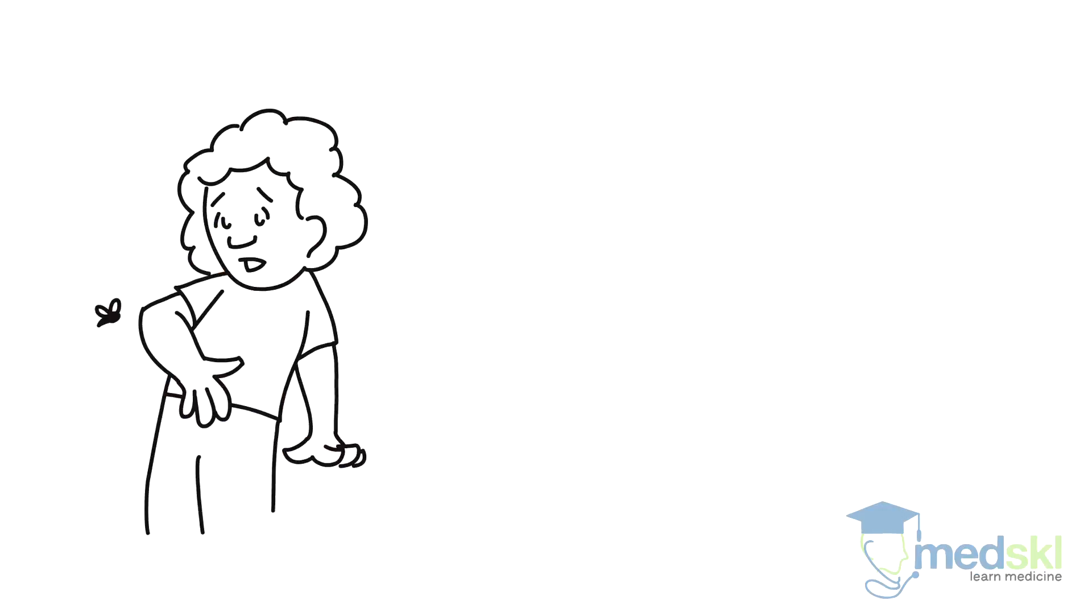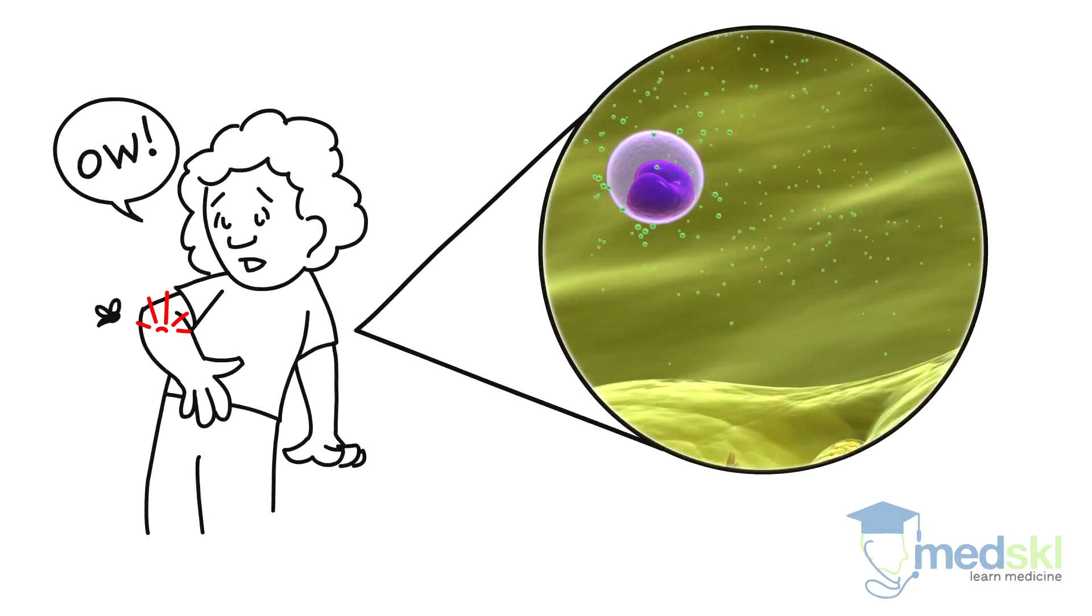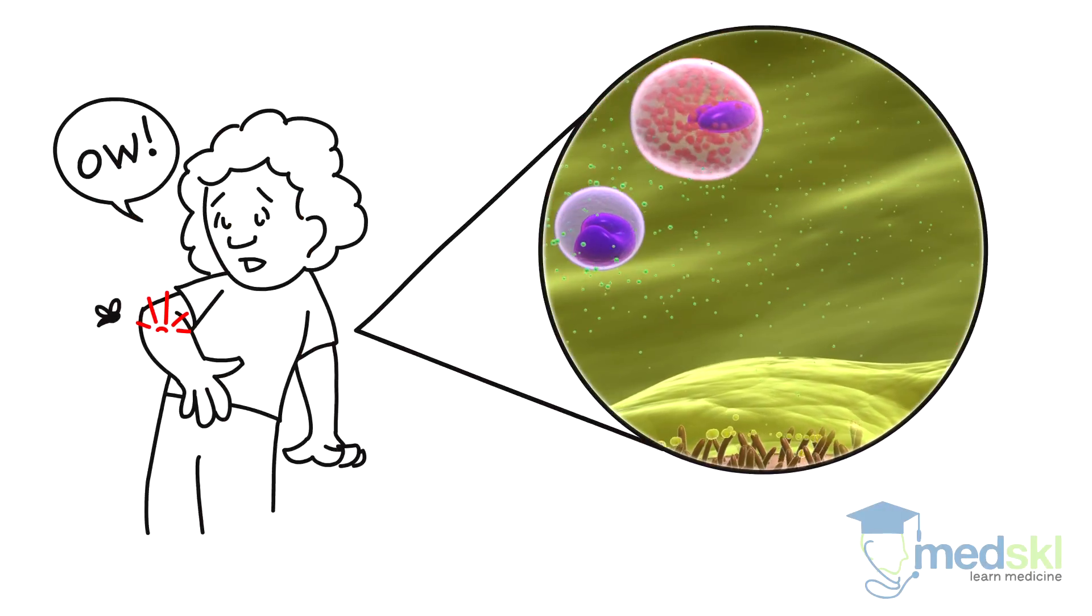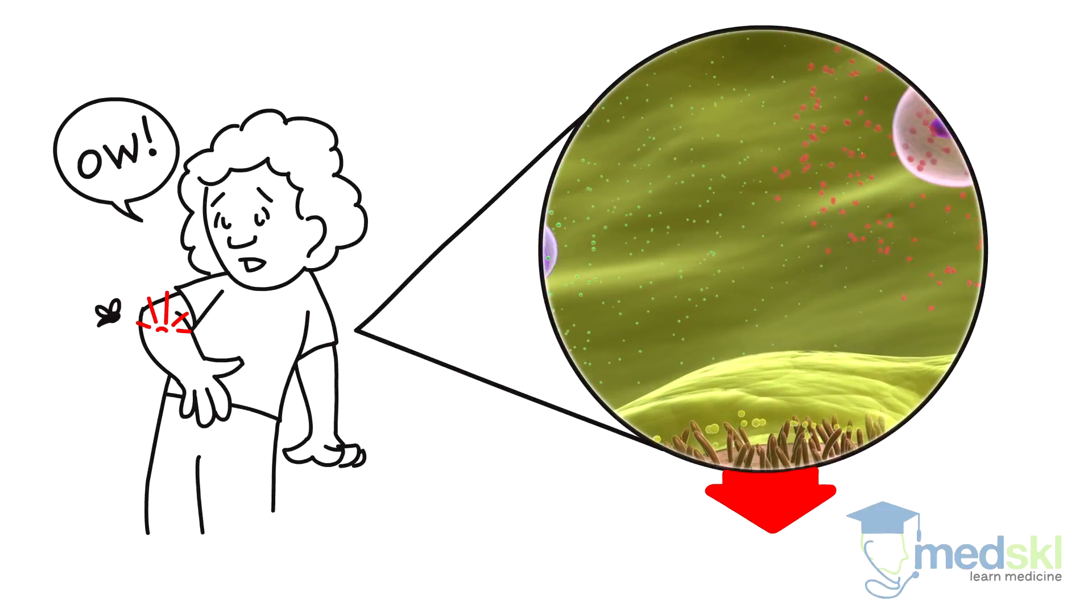Upon exposure to one of these triggers, sensitized individuals release massive amounts of histamine, leukotrienes and other inflammatory mediators from mast cells in their blood, leading to a spectrum of symptoms.